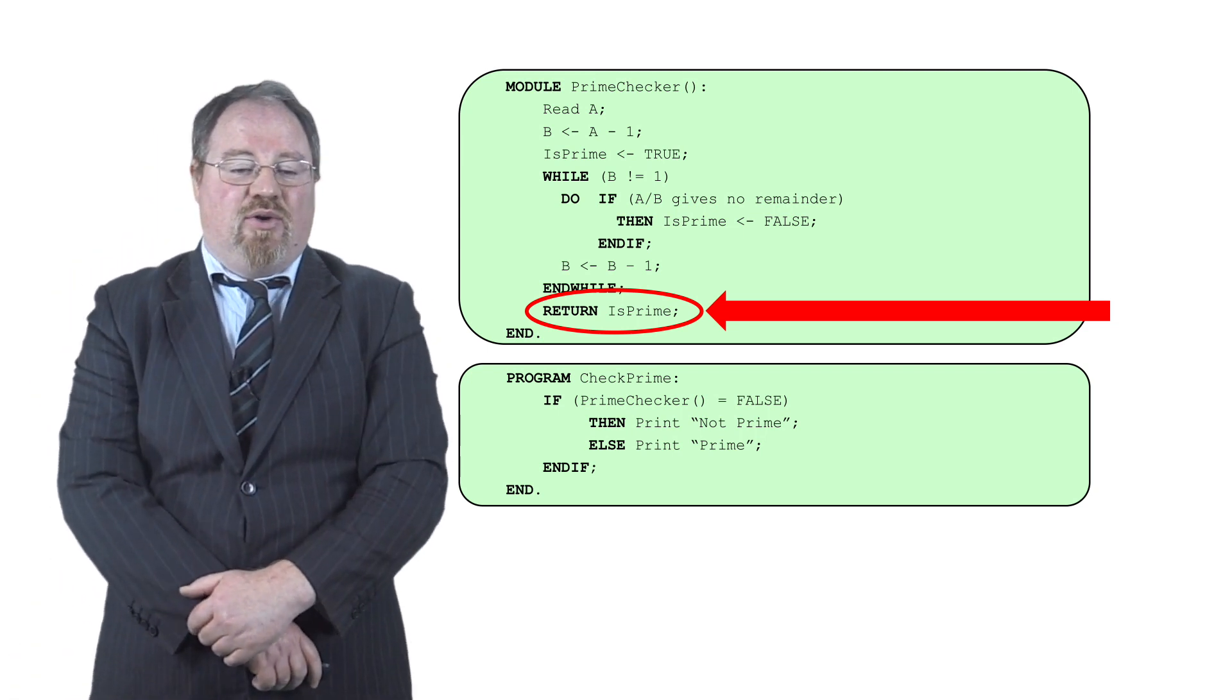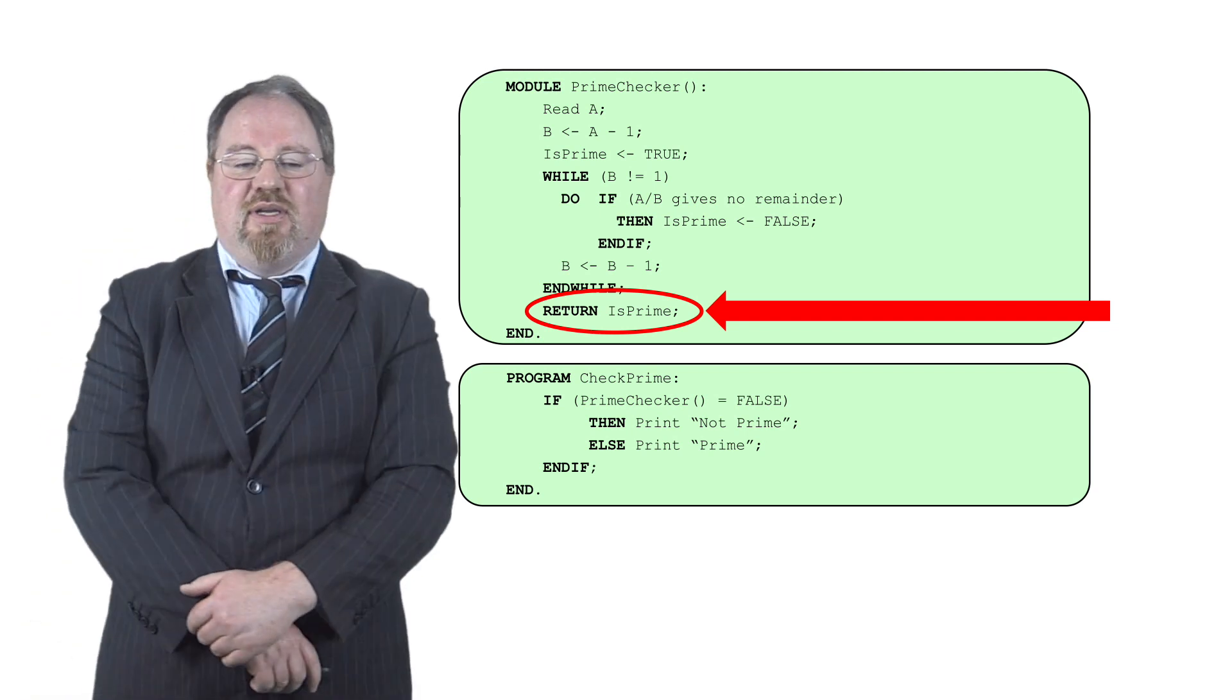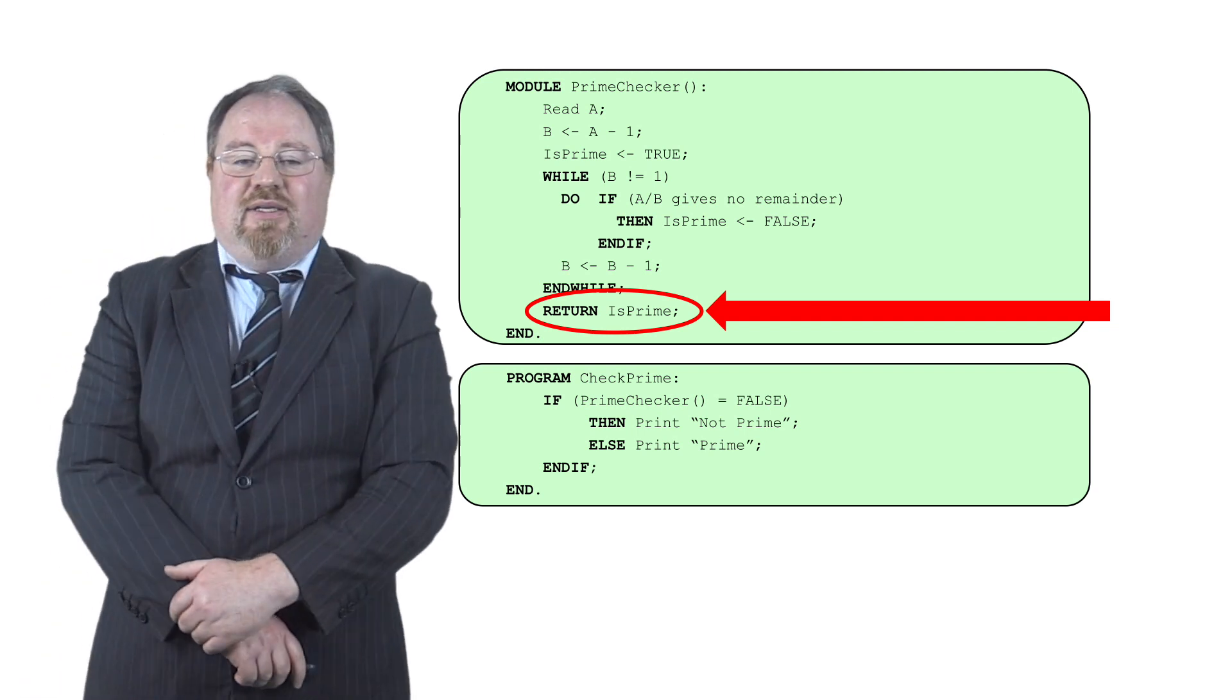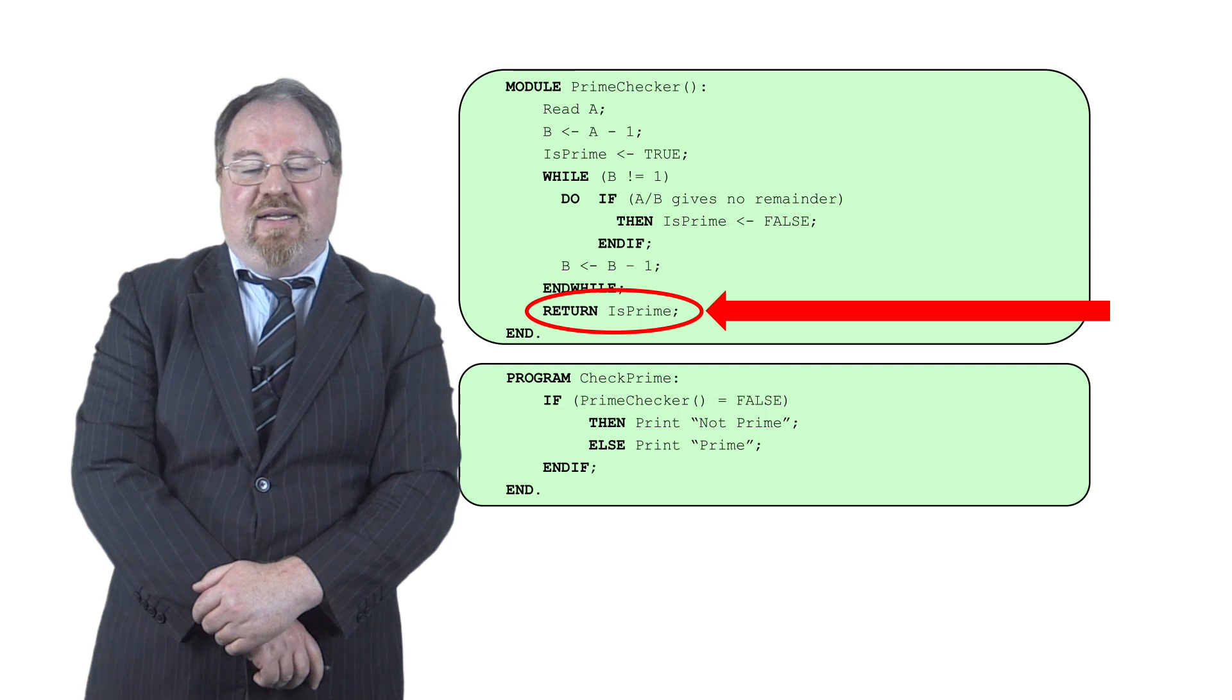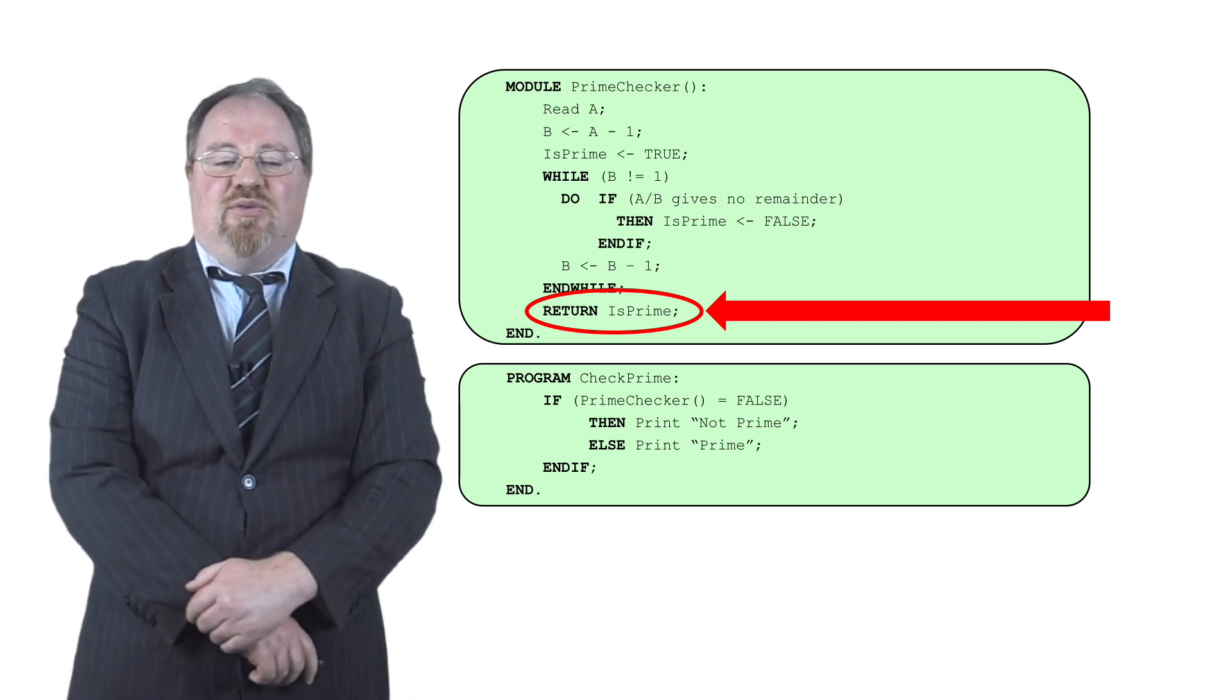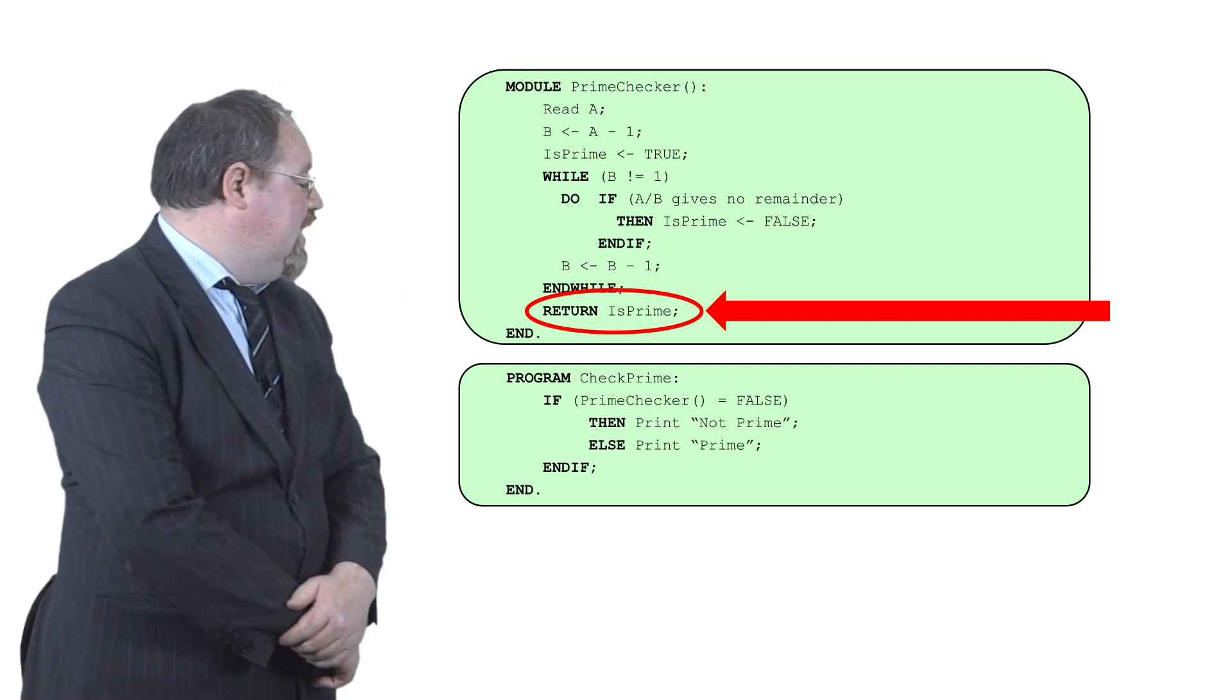And then as you can see in the code in check prime, it says if prime checker equals false. So that is, if what I've returned is that the number is not prime, then say it's not a prime number. So we're passing the output of the module prime checker to the main program check prime using the variable is prime. And we use the return statement to allow us to do that.